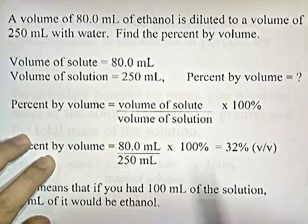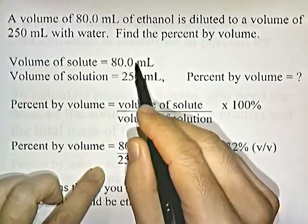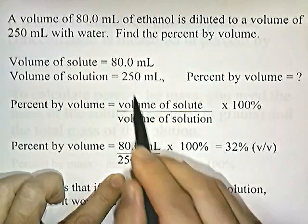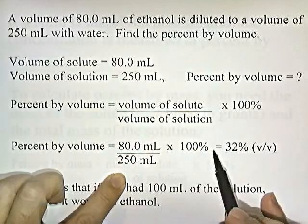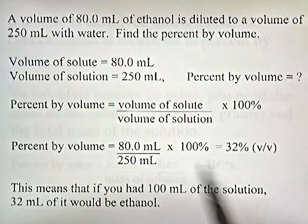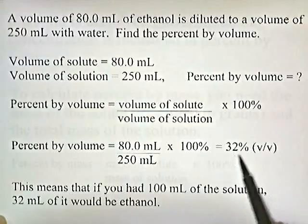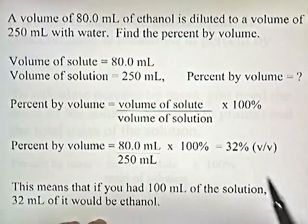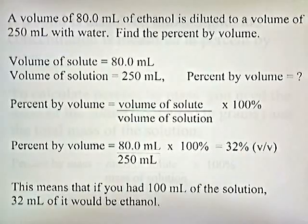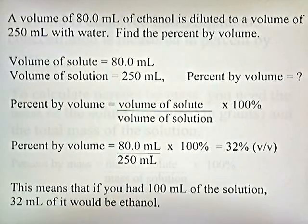So the percent by volume equals volume of the solute, 80, divided by the volume of the solution, 250, times 100. If you do 80 divided by 250 times 100, you get 32% by volume. The notation V/V means percent by volume. So what does 32% mean? It means that if you had 100 milliliters of the solution, 32 milliliters of it would be ethanol, and the rest would be water.